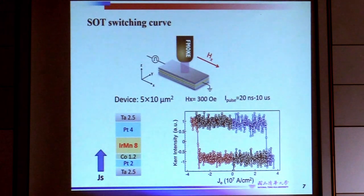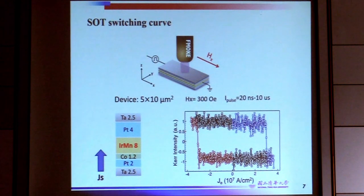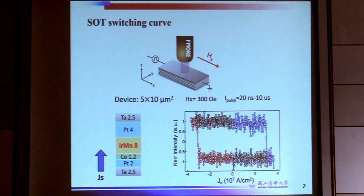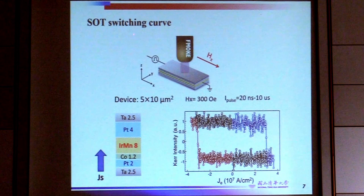We then perform the SOT switching curve using a Hall bar structure with dimensions 5×10 μm². We apply an external in-plane field and observe a quite typical SOT switching curve. Based on the polarity of the switching curve, the major spin current is actually coming from the bottom. Remember that without IrMn, we had spin current coming from the top. Here we increased the thickness of the platinum, so initially one might expect spin current from the top, but based on the SOT switching polarity, the major spin current is in fact from the bottom platinum.